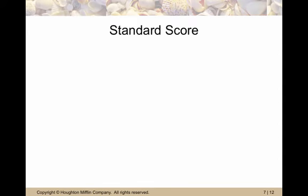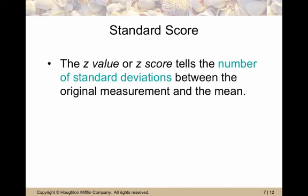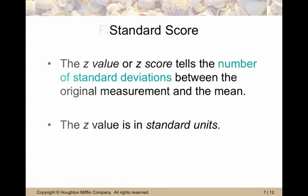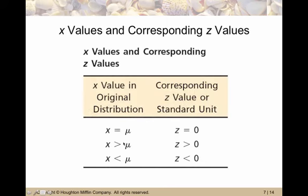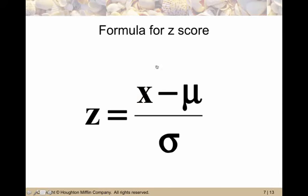There is something called the standard score or z-score and it tells you how many standard deviations above or below the mean a particular raw score or observation is. So the z-value or z-score tells you the number of standard deviations between the original measurement and the mean. It's in what's called standard units and it's x minus mu over sigma. So it's the observation minus the mean over the standard deviation. If the observation is exactly equal to the mean, it's going to have a z-score of 0 because your numerator would be 0.